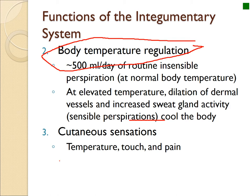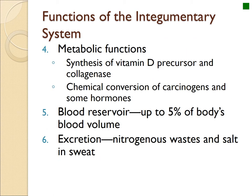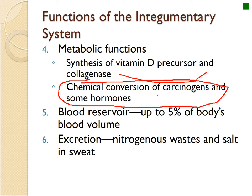The skin helps detect temperature as part of our temperature regulatory system. It gives us cutaneous sensations — allowing us to detect outside temperature, feel touch, and feel pain, which are two separate receptors. The skin also has metabolic functions, helping with the production of vitamin D, usually with exposure to sunlight, which varies based on skin color and diet. It also allows for chemical conversion of things in the blood, and certain toxins can be turned into carcinogens in the skin. The skin is also capable of producing hormones.